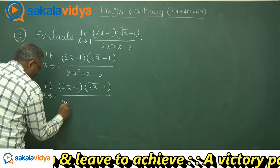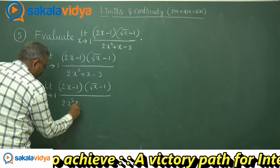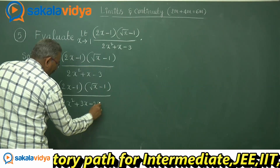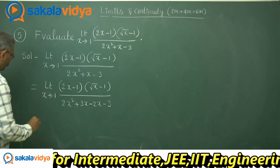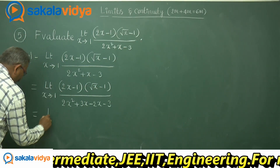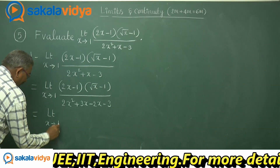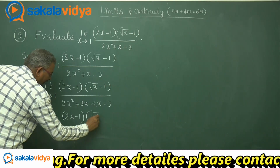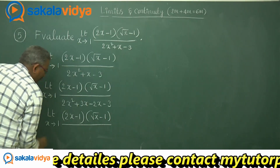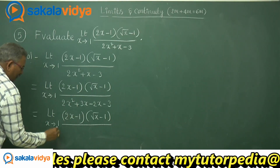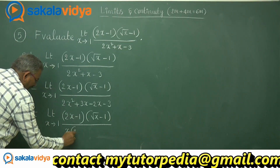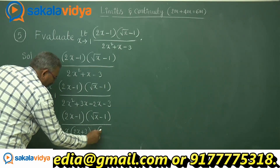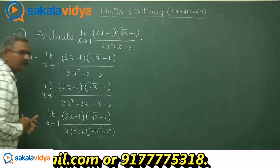Let us change the denominator like this: 2x² plus 3x minus 2x minus 3. Now in the limit x tends to 1, from the first two terms let us take x common — we have 2x plus 3 — and from the last two terms, minus 1 common gives us 2x plus 3.